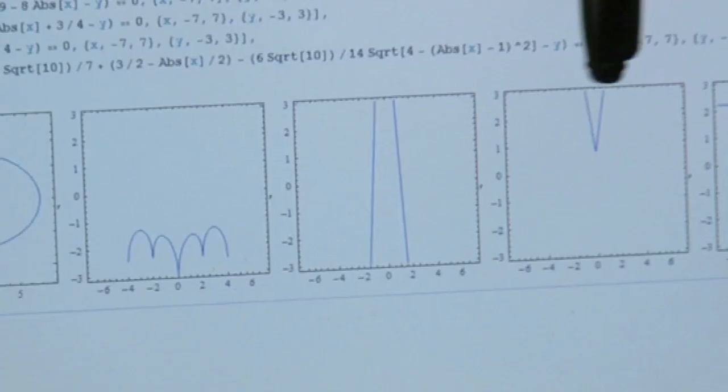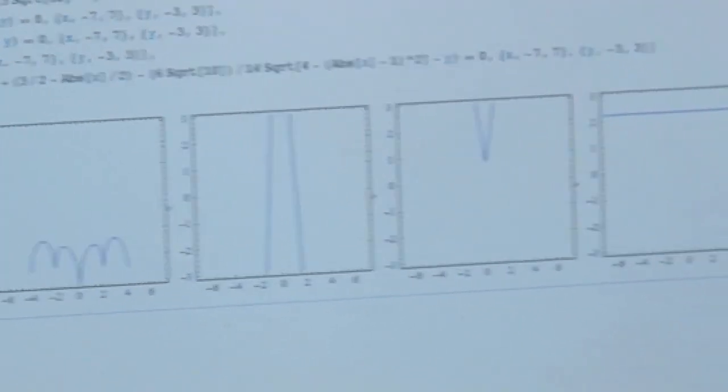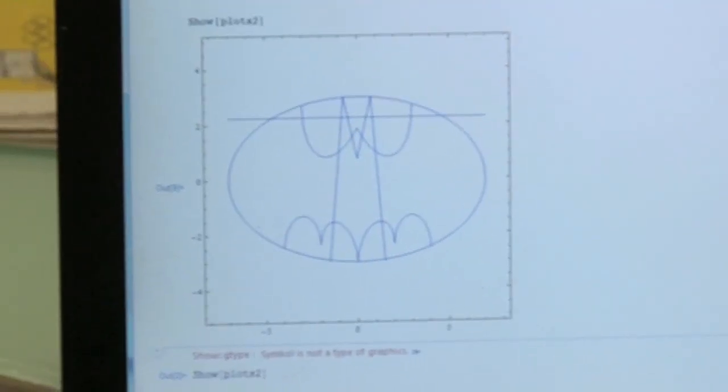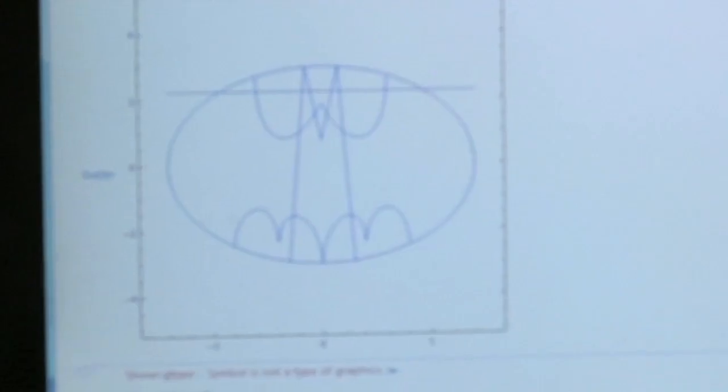These straight lines are going to form his ears, very pointy ones there. And then some more curves that finish off the picture. You put it all together, and that's what you get. That's the Batman.